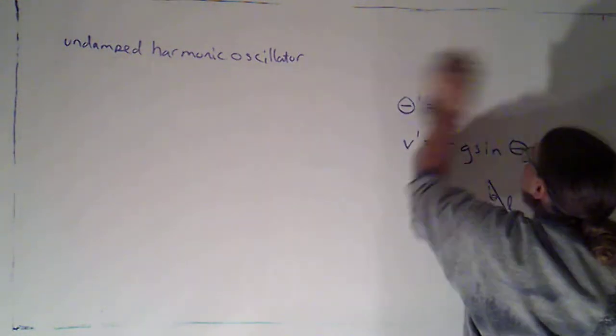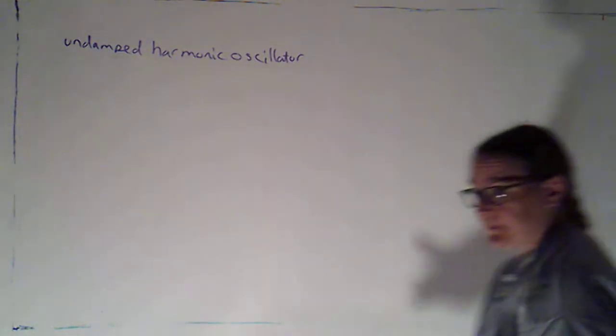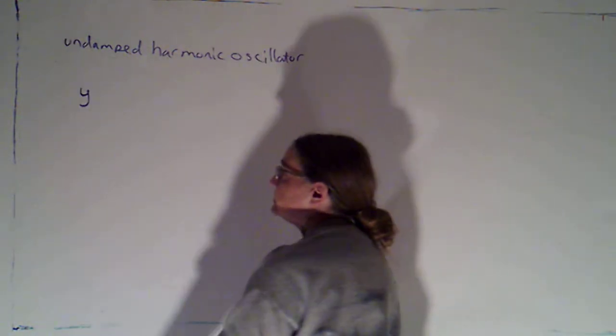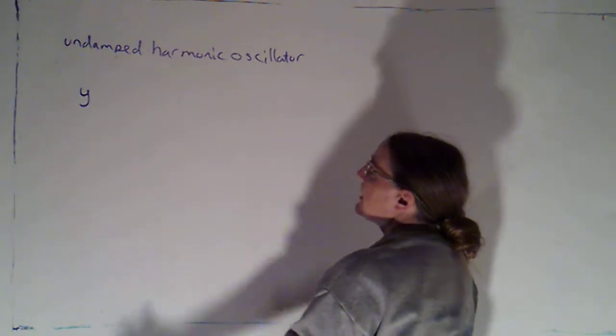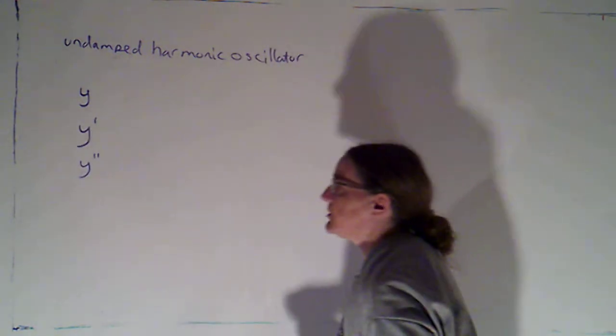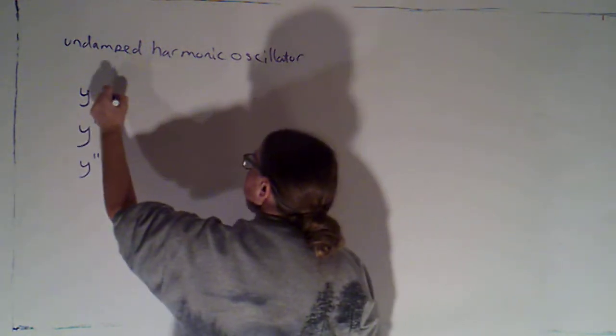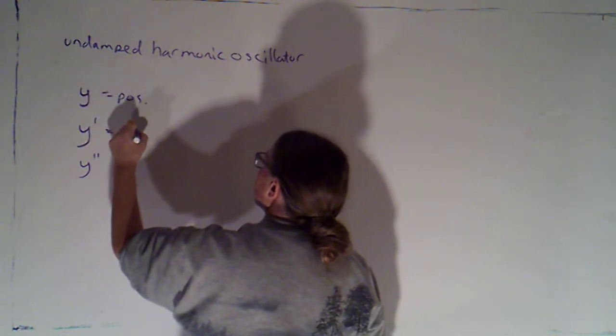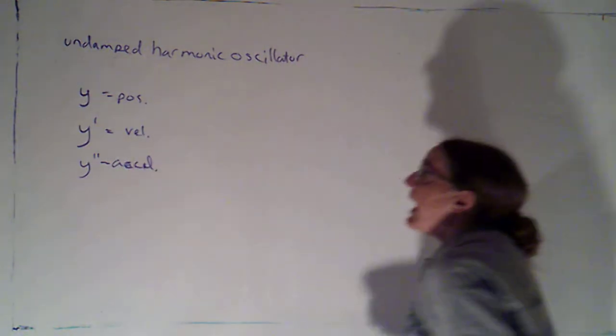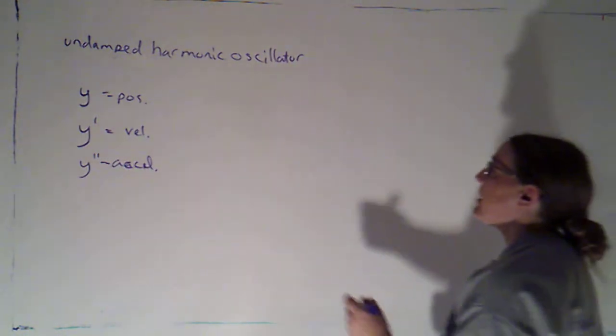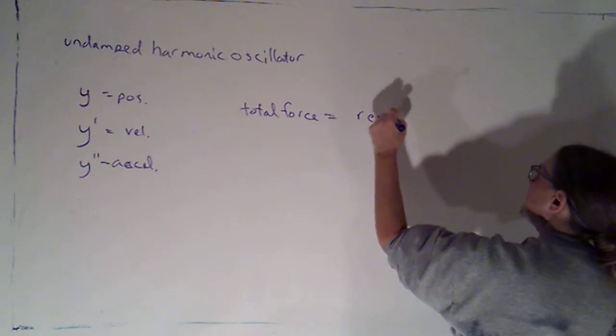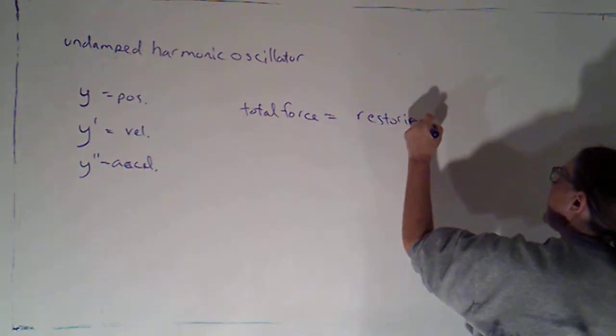So let's take a look at our undamped harmonic oscillator. If y is my position, then I know that y prime would be my velocity and y double prime would be my acceleration. And if it's an undamped harmonic oscillator, then the total force that's acting on it is nothing but the restoring force that we get from Hooke's Law.